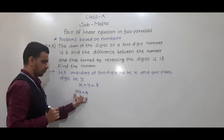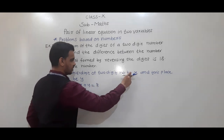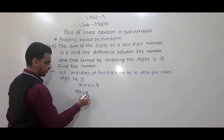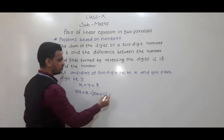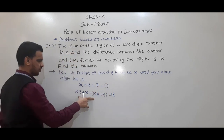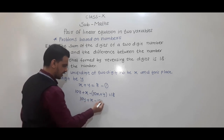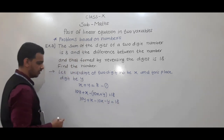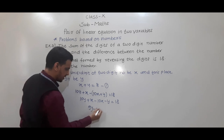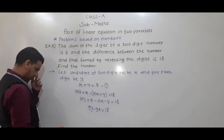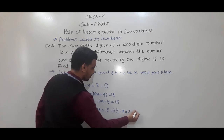If we reverse the digits, tens digit becomes x and units digit becomes y. The difference between the original number and the reversed number: 10y plus x minus (10x plus y) equals 18. Simplifying: 10y minus y gives 9y, and x minus 10x gives negative 9x, so 9y minus 9x equals 18. Dividing by 9: y minus x equals 2. This is equation 2.